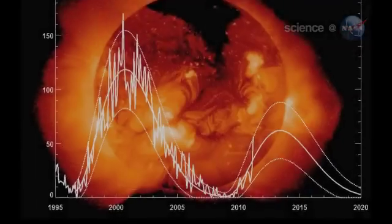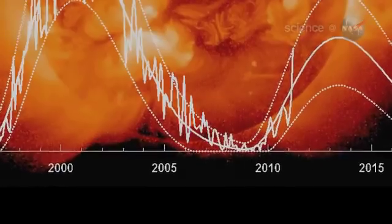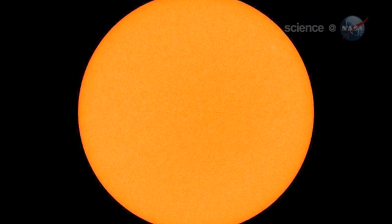Back in 2008, the solar cycle plunged into the deepest minimum in nearly a century. Sunspots all but vanished, solar flares subsided, and the Sun was eerily quiet.